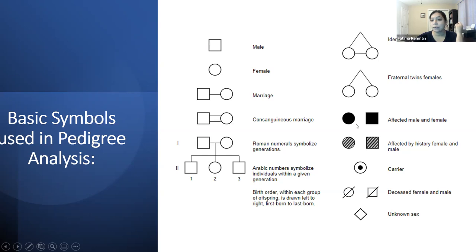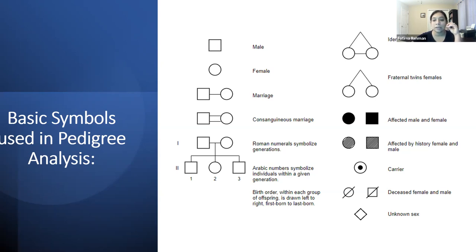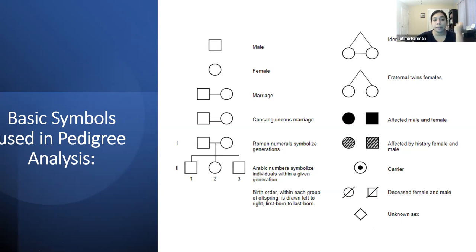If you have an affected individual, they are filled in. If they are speculated to be affected based on history of the disorder, they are kind of half-filled in. If it's a carrier, it's shown as a dot inside the circle. For people who have passed away, it is denoted by a diagonal line. If the sex of an individual is unknown, you use a diamond sign. You can practice these symbols by drawing a pedigree of your own family going back three or four generations.